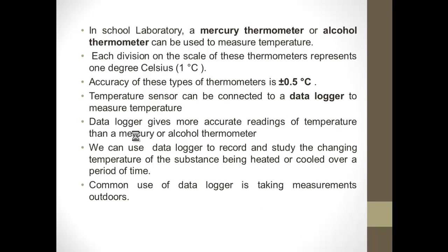In school laboratories, two types of thermometers are used: mercury thermometer and alcohol thermometer to measure temperature. Each division in these thermometers represents 1 degree Celsius, and accuracy of these types of thermometers is 0.5 degrees Celsius.